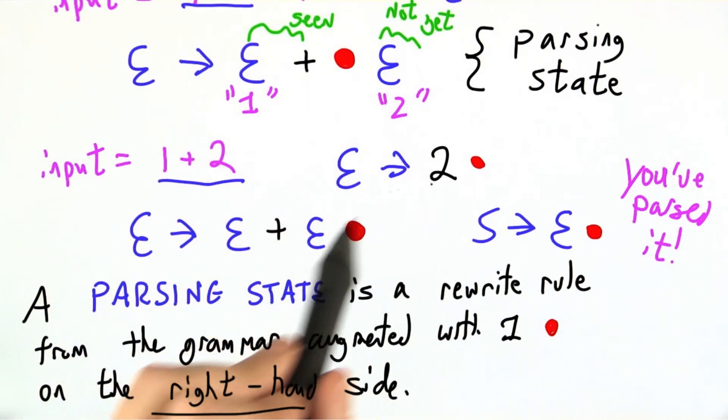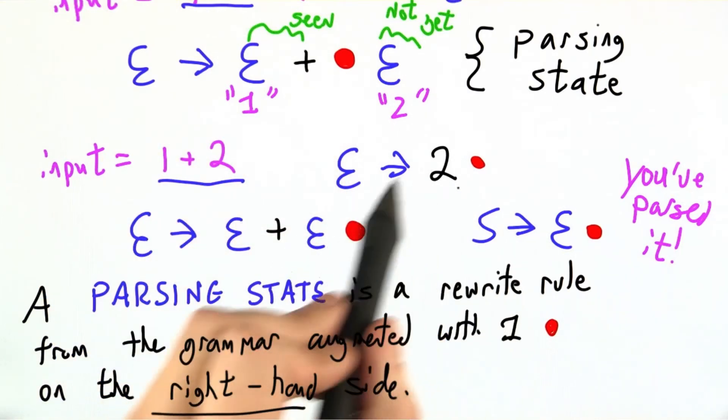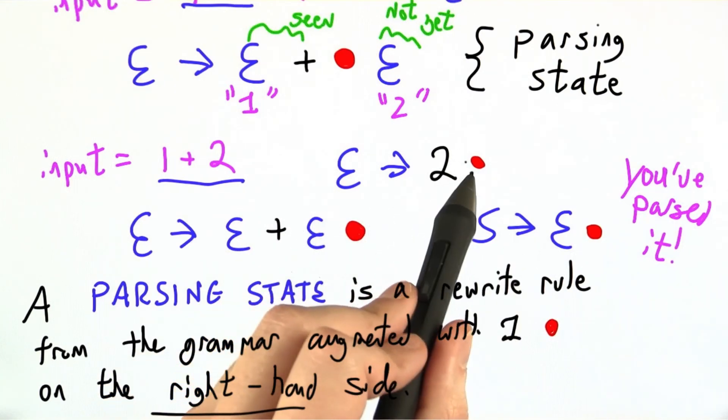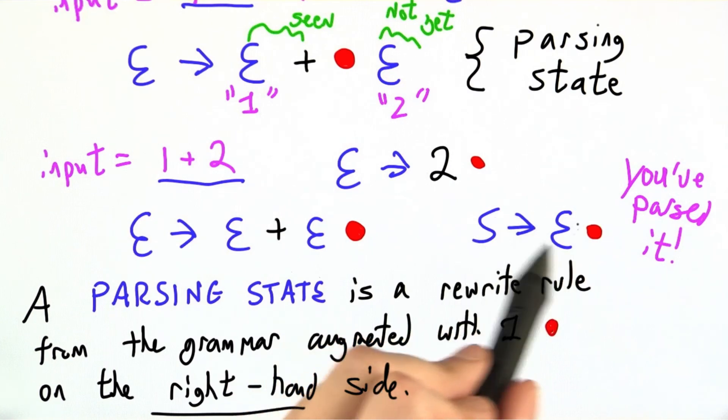Now for any given input, as we've seen here, you could actually be in maybe 3 of these parsing states at once. One way of looking at the world is that I just finished seeing the two. Another way of looking at the world is actually I'm done with everything. And those can all be true at the same time.